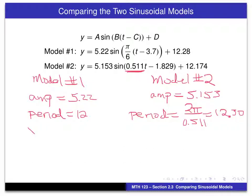The vertical shift is also easy to read. And for model number one, it's 12.28. And for model number two, it's 12.174.